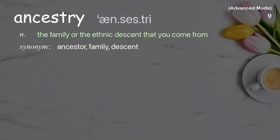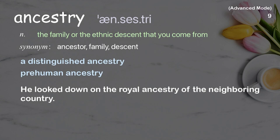Ancestry: the family or ethnic descent that you come from. Examples: a distinguished ancestry; pre-human ancestry. Example sentence: He looked down on the royal ancestry of the neighboring country.